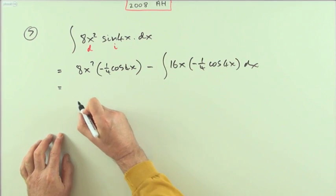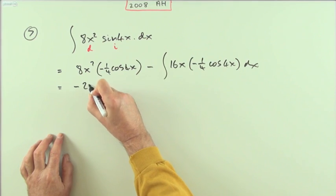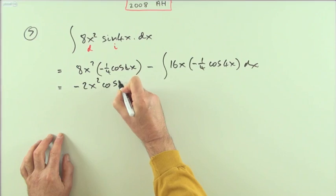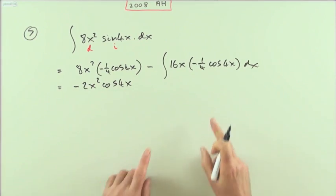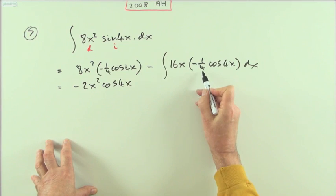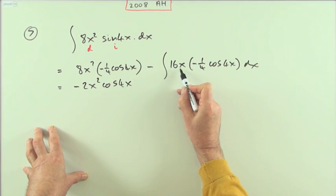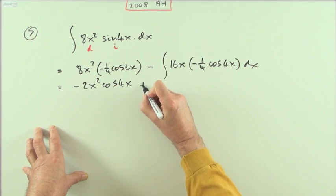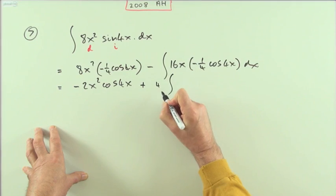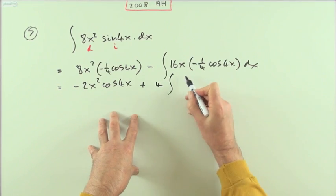This part here I'll tidy up a bit because 4 is going to go into 16 twice. So I've got negative 2x squared cos 4x and it can just wait. I can tidy this bit up as well because I can take that 4 out—4 into 16 goes 4—that can come out and there's a negative, so I've got plus 4 times the integral of x cos 4x dx.